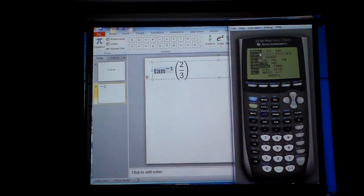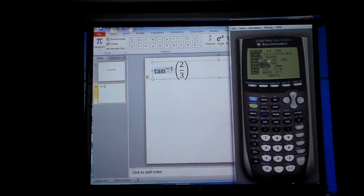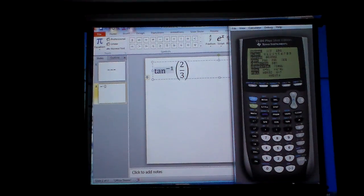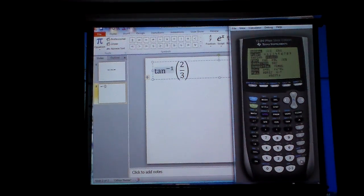I'm going to check my mode. It is in radians. If I want my answer in radians, I can leave it alone. If I want it in degrees, I'm going to arrow down, click over, and hit enter like that.